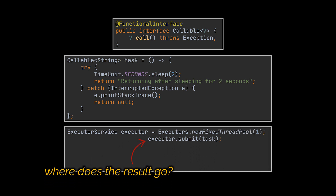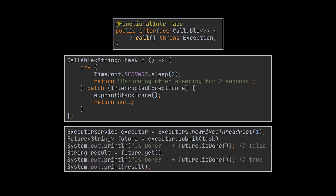Callables can be submitted to executor services just like Runnables. However, running asynchronously means not waiting for a result — since the submit method doesn't wait until the task completes, the executor service cannot return the result of the Callable directly. Instead, the executor returns a special result of type Future, which can be used to retrieve the actual result at a later point in time. After submitting the Callable, you can check if the Future is done via the isDone method, and calling get blocks the current thread until the Callable completes and returns the actual result.